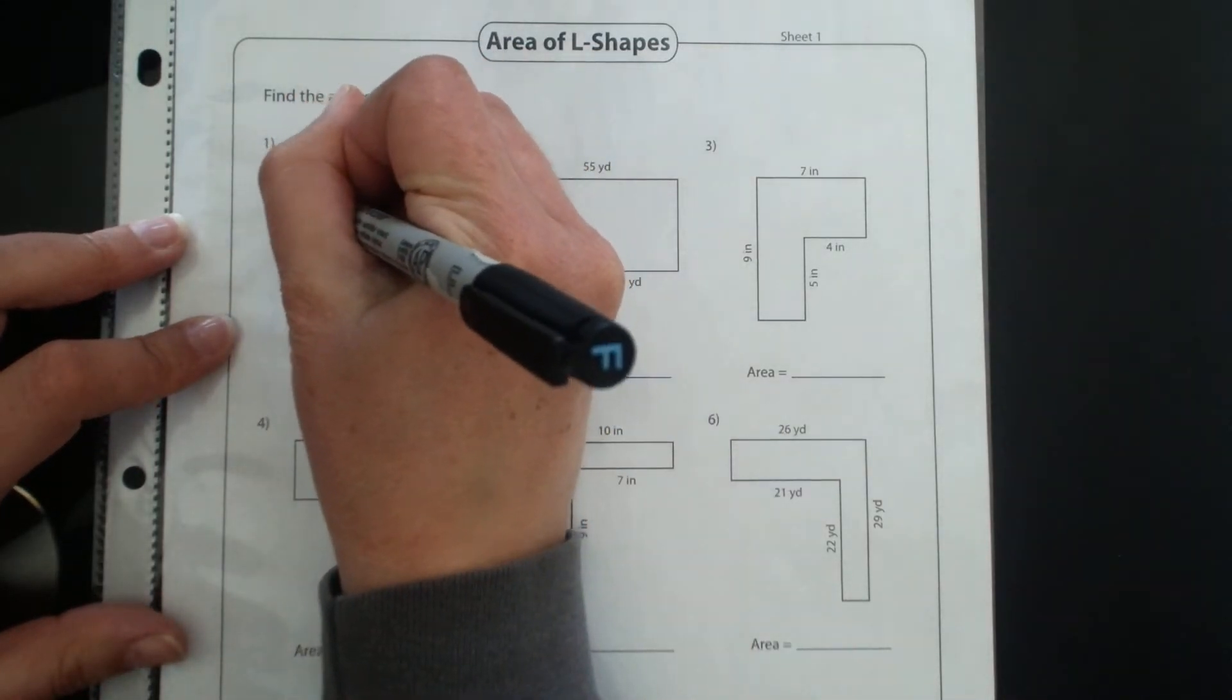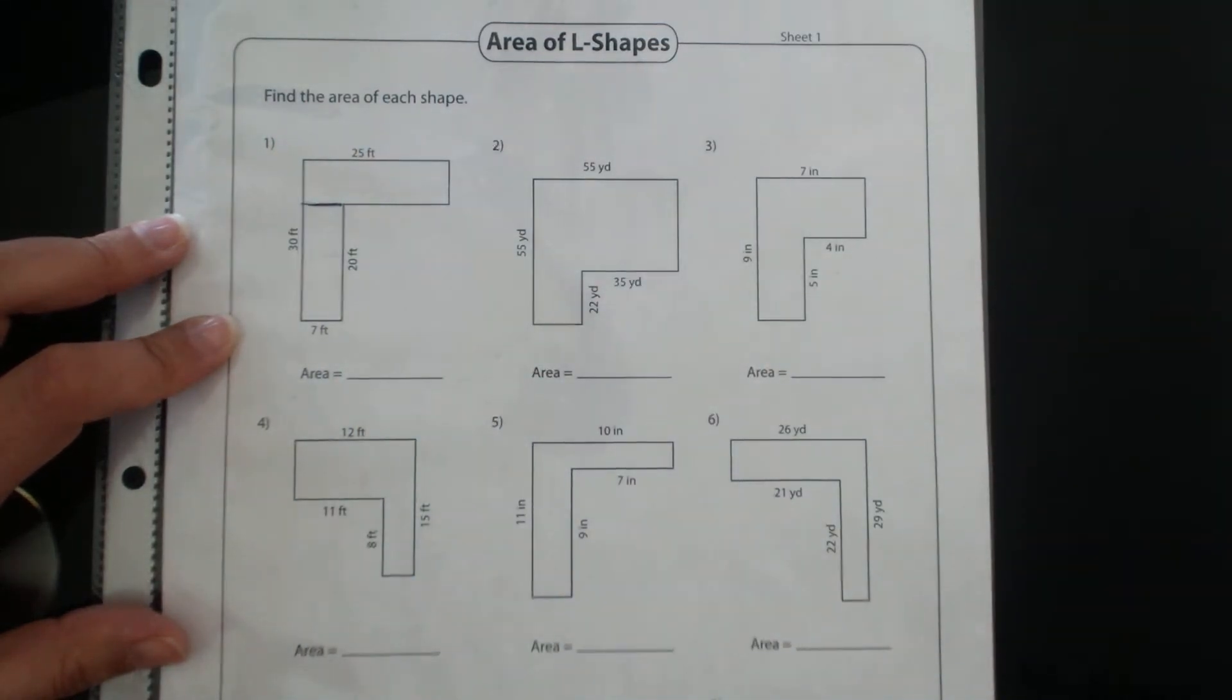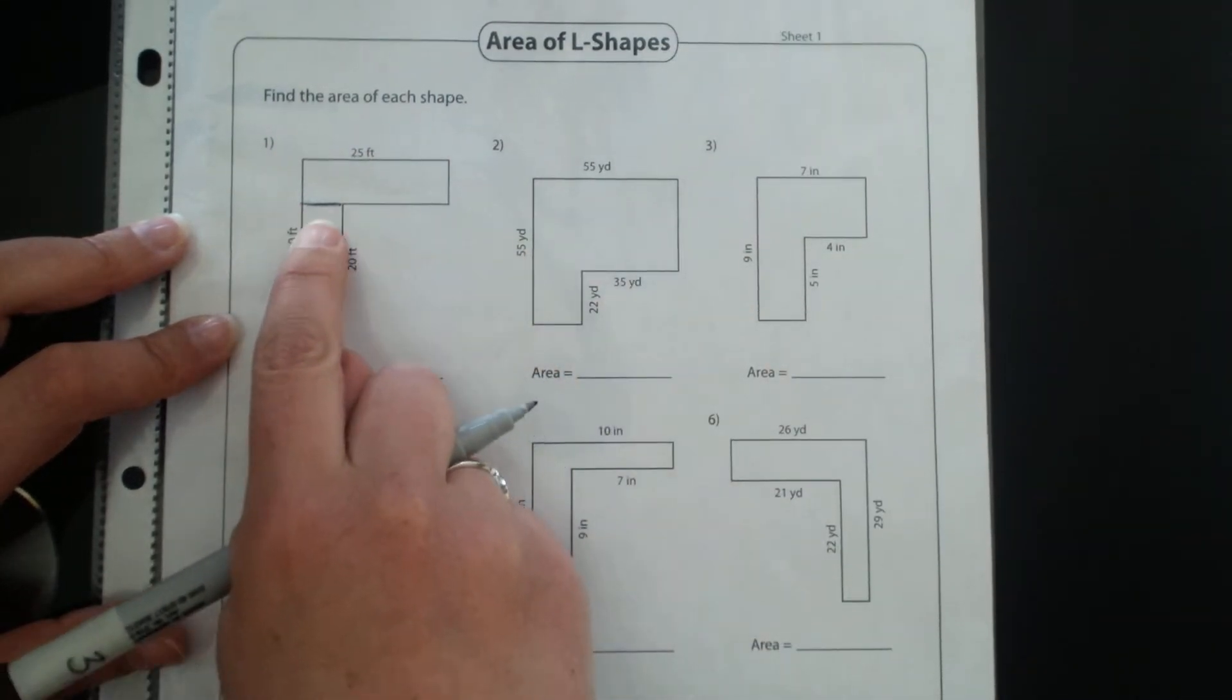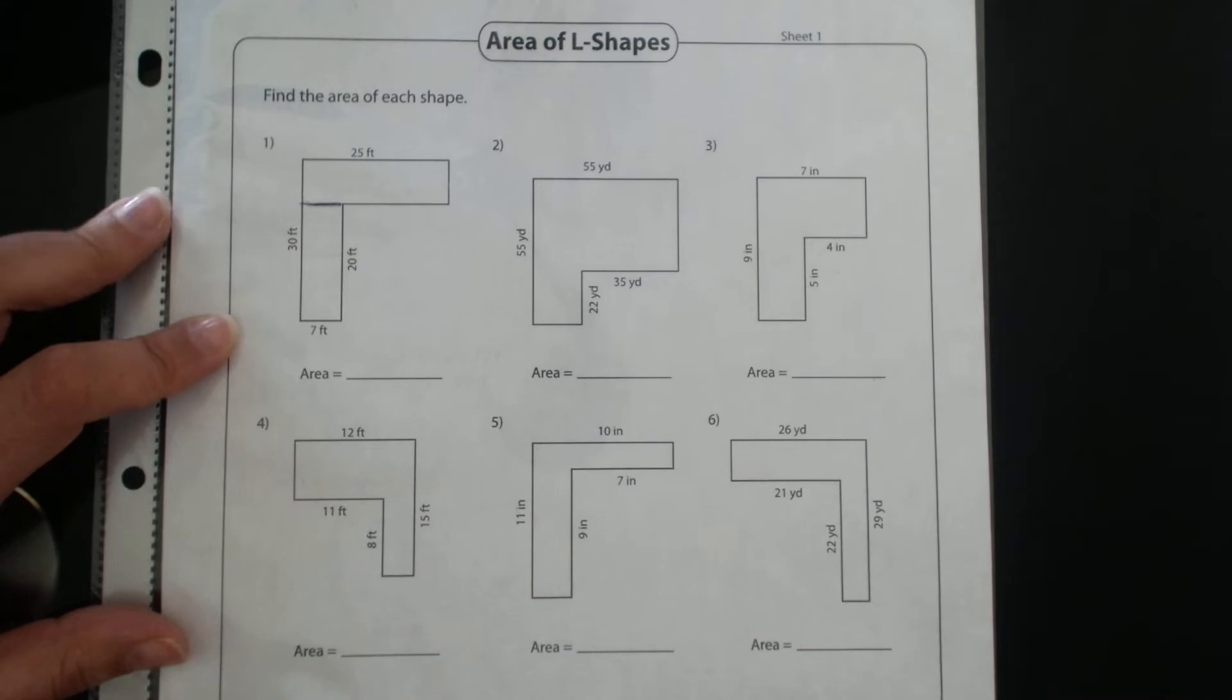I notice right away that if I draw a line there I have a rectangle along the top and a rectangle along the bottom.